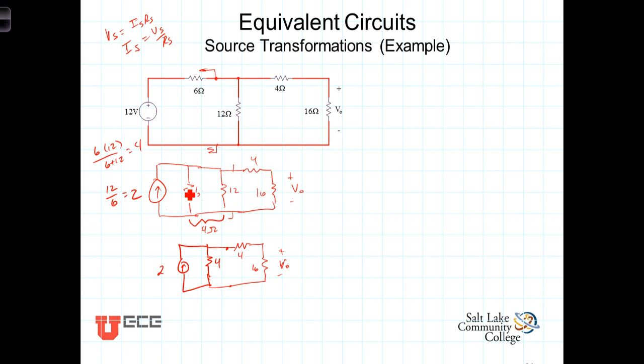Now, once again, or now, for the next step, we note that we have this current source in parallel with this 4-ohm resistor. So we can once again do a source transformation and replace this parallel combination with a voltage source and bring this 4-ohms up into series with the voltage source.